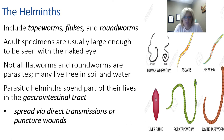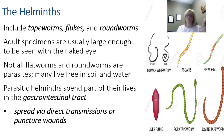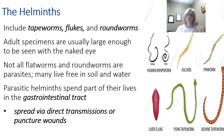Moving on to helminths — our worms: flukes, roundworms, and tapeworms. These can be long, like tapeworms, up to 25 meters in length, or small, like a roundworm, which is less than one millimeter. We study these because even though they're not microscopic themselves, they have infective properties and can produce microscopic eggs or larvae. So part of their life cycle is microscopic in nature.